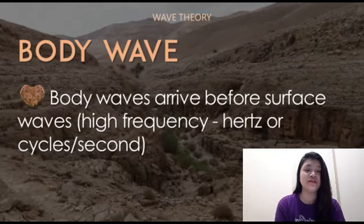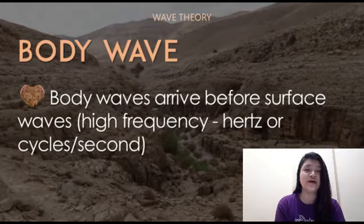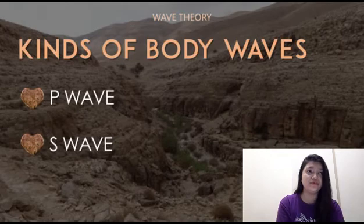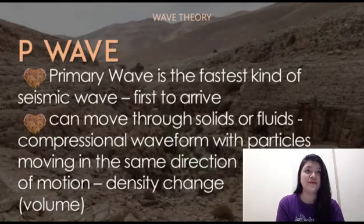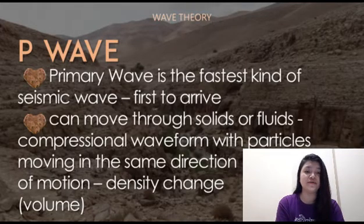Body waves travel through the interior of the earth. Body waves arrive before the surface wave emitted by an earthquake, and are of a higher frequency than surface waves. There are two kinds of body wave: the P wave and the S wave.